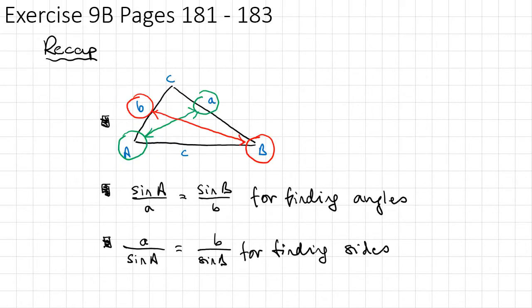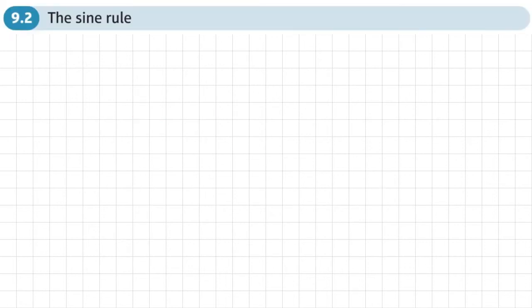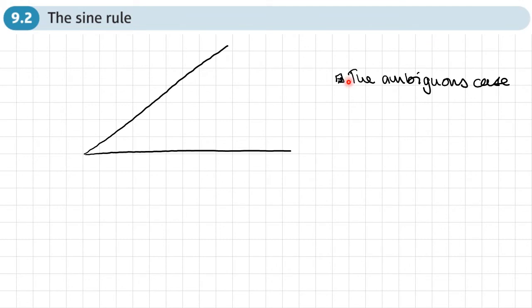You should now be able to do exercise 9B on pages 181 to 183. Now we're going to move on to something called the ambiguous case. Ambiguous means not clear. If I have two sides of a triangle and I want to draw a third side of a particular length, there may be more than one possible position for it.